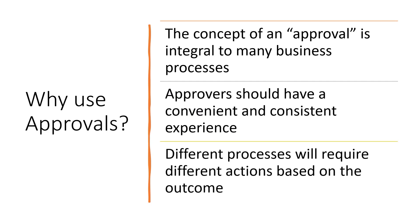There are many different kinds of Power Automate flows for very different processes, and each requires different actions based on the decision made. Some logic may be involved in deciding who the approver will be — for example, if a business expense is up to a certain amount it goes to one person, and if it's beyond that amount it goes to somebody else. You can build that logic into your Power Automate flows, so rather than building separate approval processes you can build one that acts conditionally and sends it to the appropriate party.